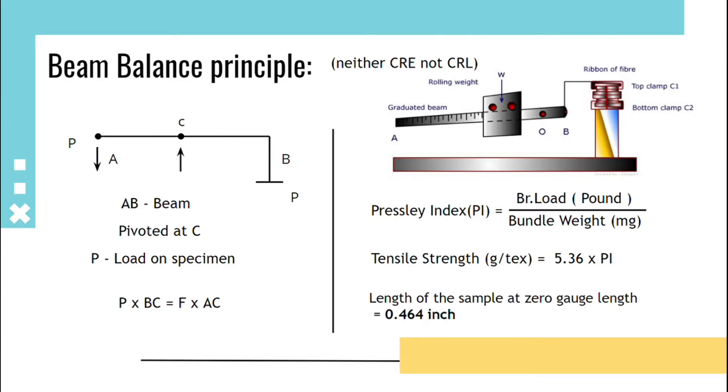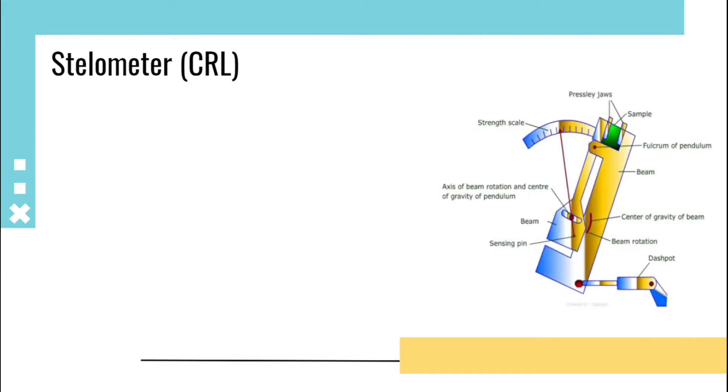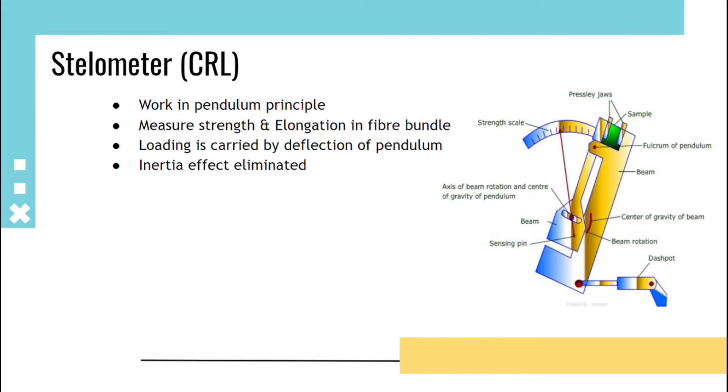Stelometer, constant rate of loading. It works in pendulum principle. It measures strength and elongation of a fiber bundle. Loading is carried by the deflection of the pendulum. Here, inertia effect is eliminated by taking moment.